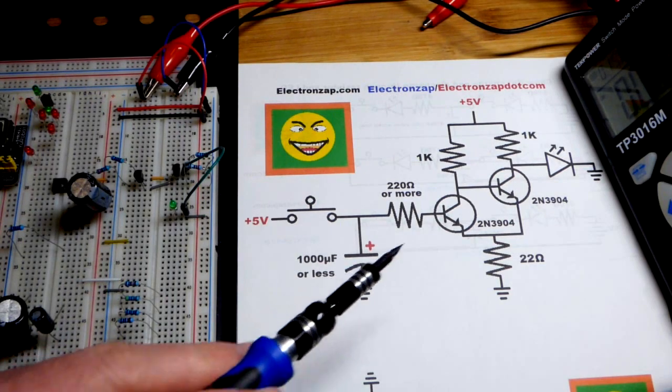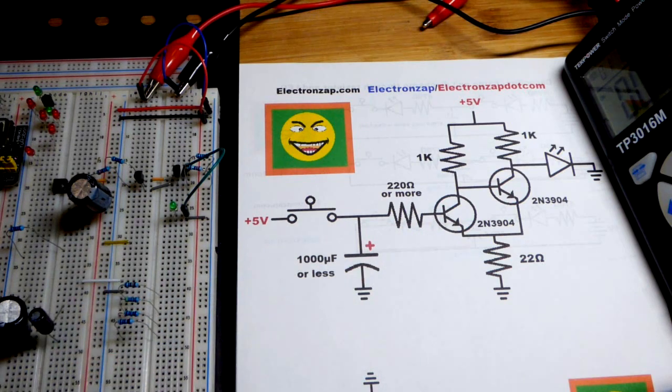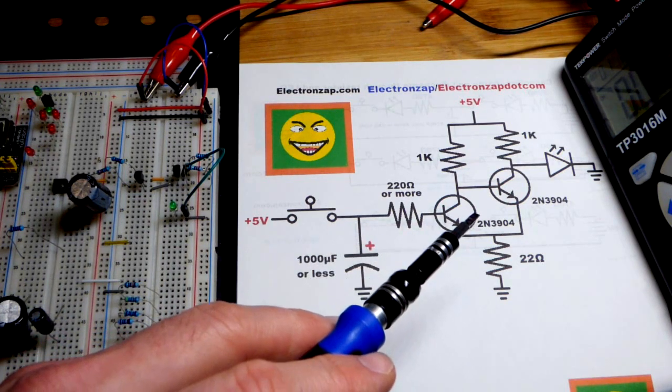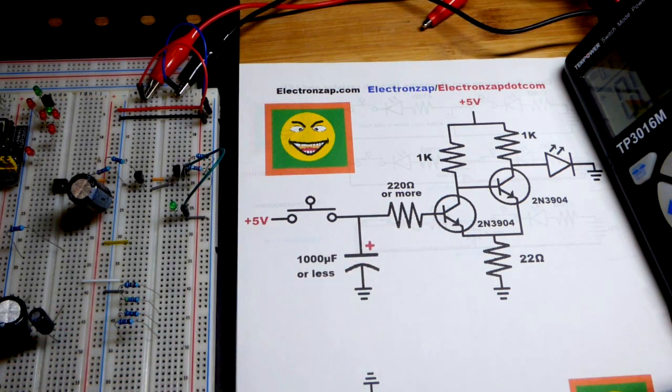Now in this video we're going to modify the last circuit. We had a Schmidt trigger and we really looked at it used as a Schmidt trigger. In this case we're going to use it where it makes a pretty effective delayed time-off switch.